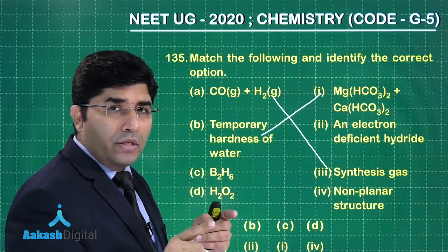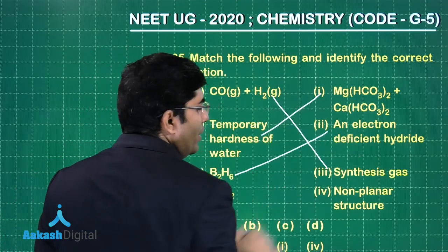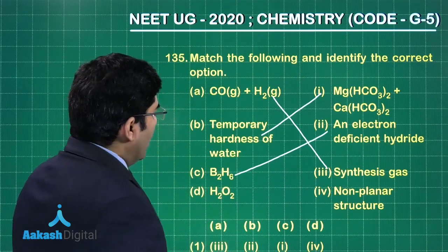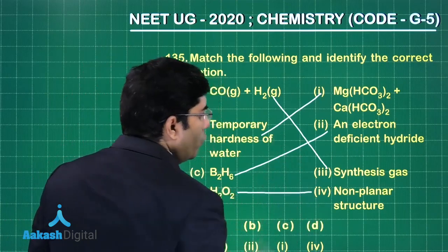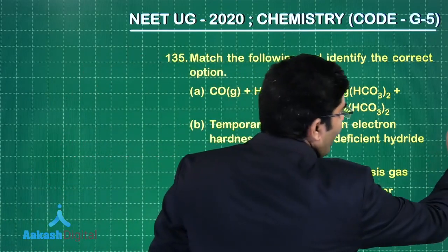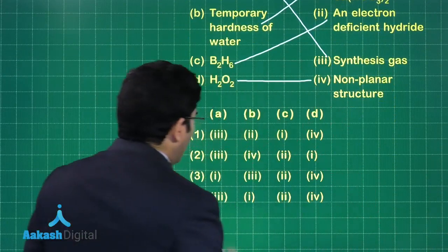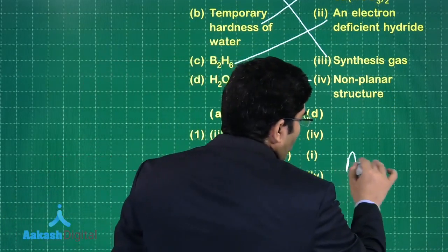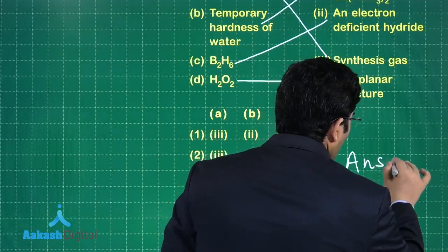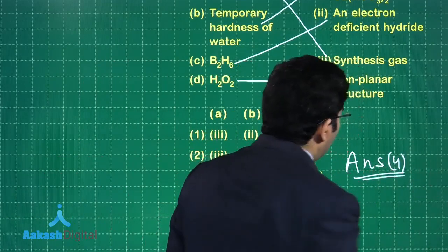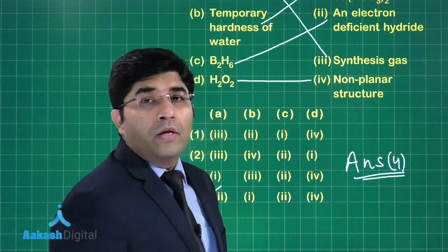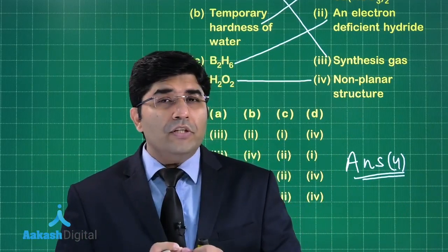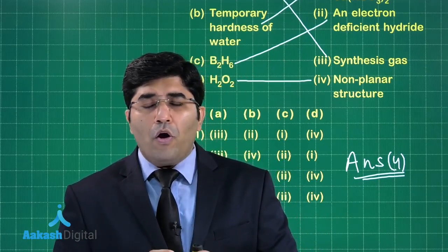B2H6 is an electron deficient hydride — it is a dimer of BH3, so the second match is correct. For H2O2, the fourth match is correct. Therefore, the overall answer is option number four.